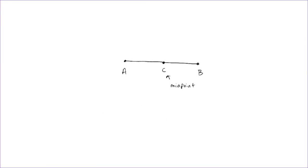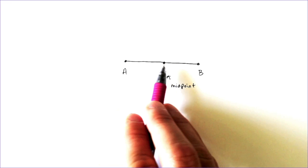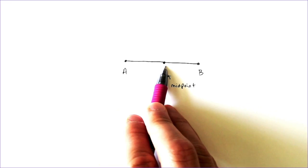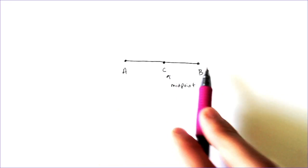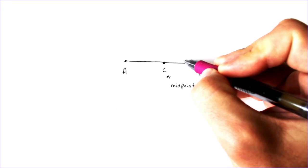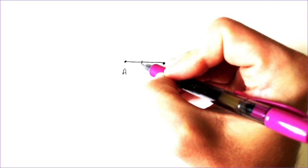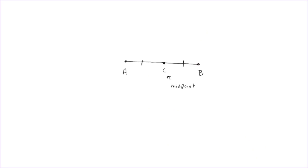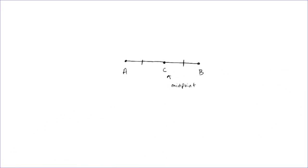So if you're told that C is the midpoint, you can use that information to your advantage, because if it is the midpoint, then that would let you know that from A to C and from C to B — if it's the middle — then those two parts would have to be equal to each other. And that's what those hash marks indicate, that those two segments are equal to each other.